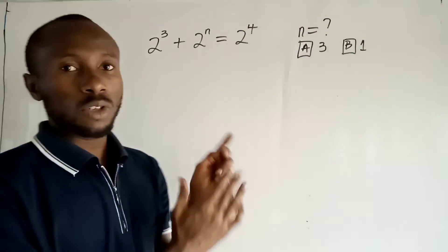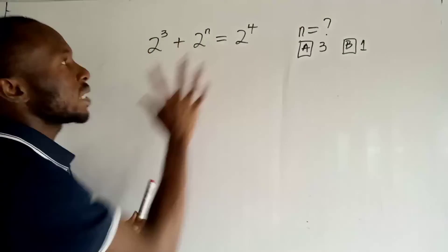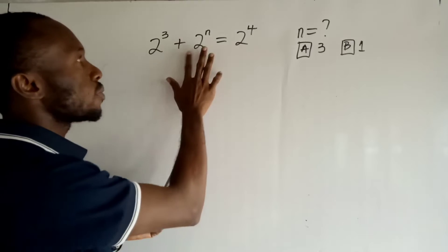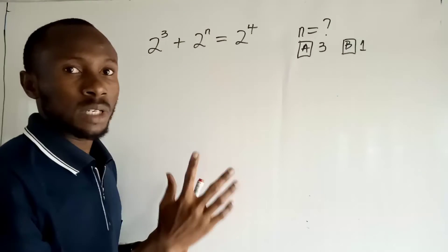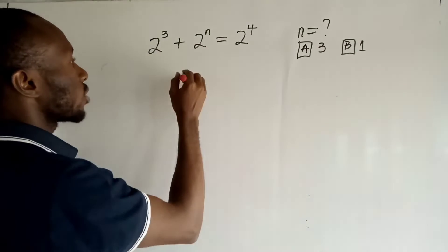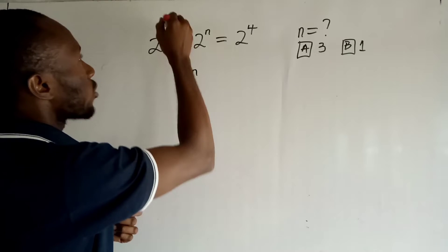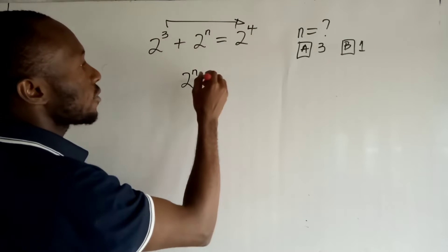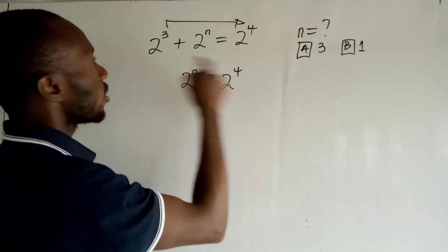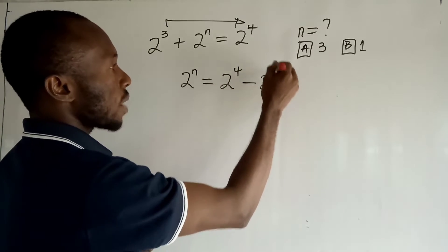So let us go back to the question right now. Now to obtain the value of n, I would like to make 2 to the power n as the subject of this equation. So I have 2 to the power n equal to 2 to the power 4 minus 2 to the power 3.